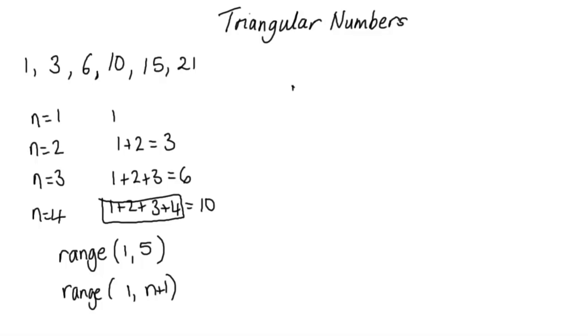Now we're ready to write the procedure. So the procedure name is triangular, and it takes an input, which is a positive integer n, and we want to output or return a number, the nth triangular number. I'm just going to call it number.